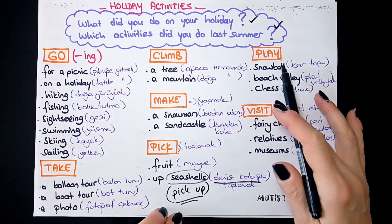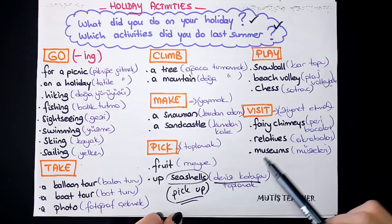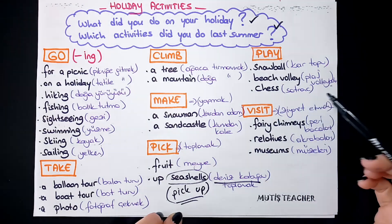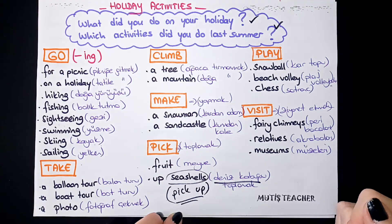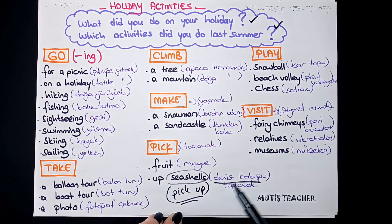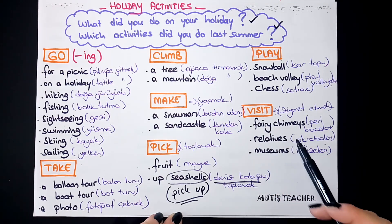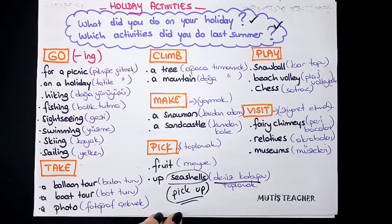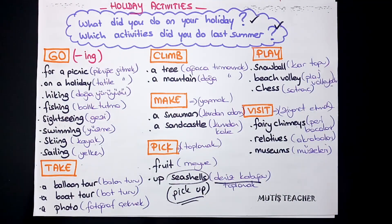Play fiiliyle: play snowball (kartop oynamak), play beach volley (plaj voleybolu oynamak), play chess (satranç oynamak). Visit — ziyaret etmek: visit fairy chimneys (peri bacalarını ziyaret etmek), visit relatives (akrabaları ziyaret etmek), visit museums (müzeleri ziyaret etmek). İşte holiday activities başlığına giren tüm kalıp fiiller bunlar — genelde tatillerde yaptığımız şeyler.